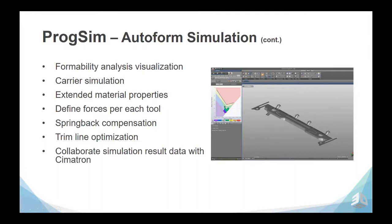On the Prog Sim side, once exported, there is formability analysis with visualization, carrier simulation, extended material properties tables. You can define forces for each tool and calculate spring back compensation, trim line optimization, and collaborate simulation results back with Symmetron.